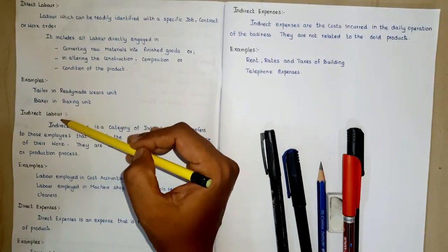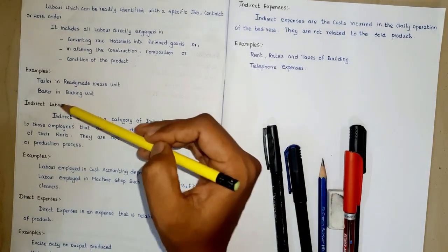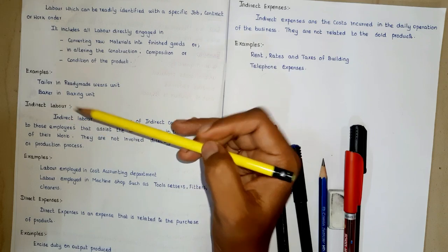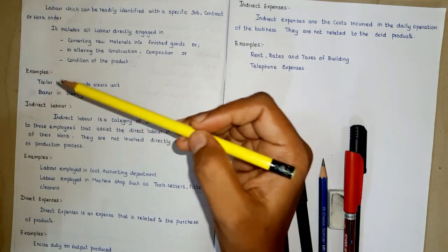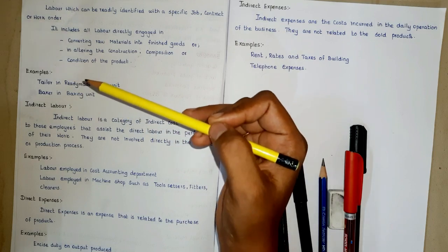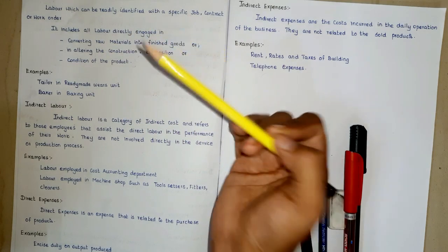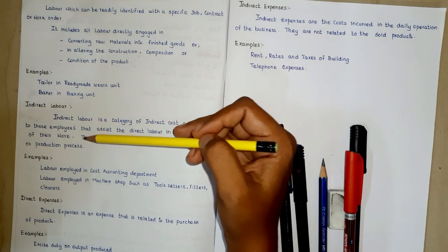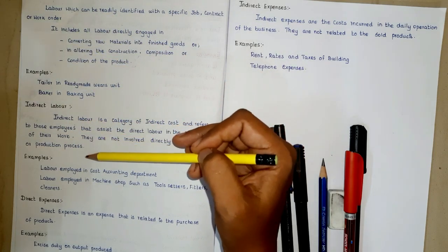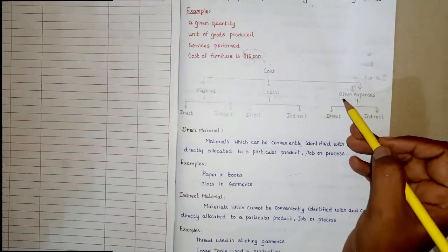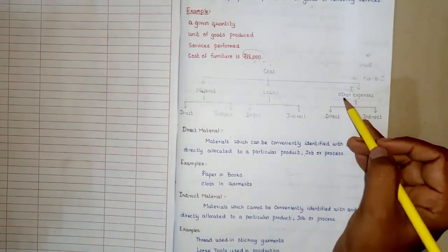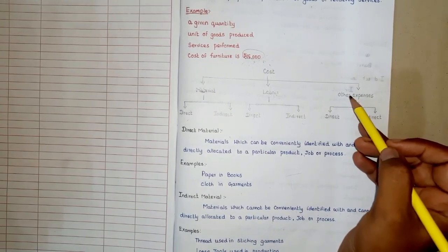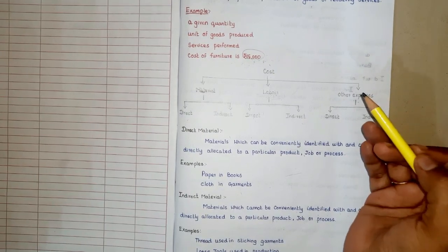Indirect labor is employee work that can't be traced back or billed to services or goods produced. For example, hair stylists at a salon who perform haircuts and other services are considered as direct labor, while the maintenance staff and the receptionist who support them are indirect labor. The last element of cost is other expenses.